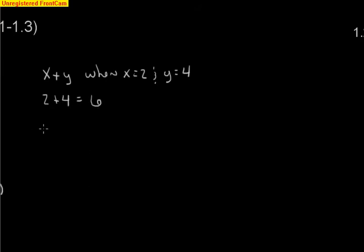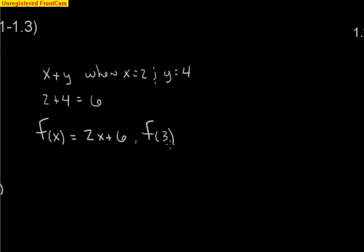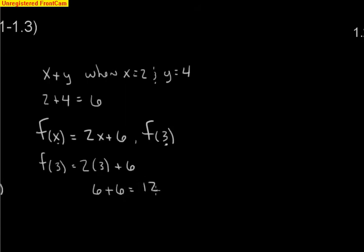We got a little bit fancier with function notation — the same process but more advanced. For example, F of X is 2X plus 6, and I asked you to evaluate F of 3. All you have to do is take the 3 and plug it in for X. So F of 3 is 2 times 3 plus 6 — 2 times 3 is 6, and 6 plus 6 is equal to 12.